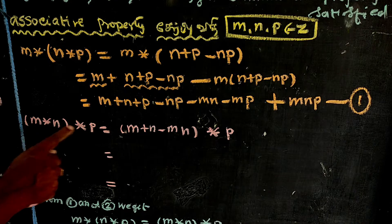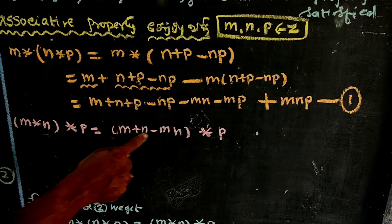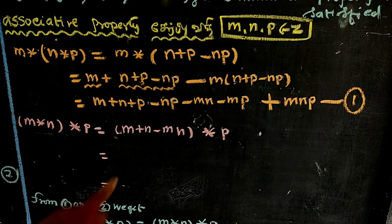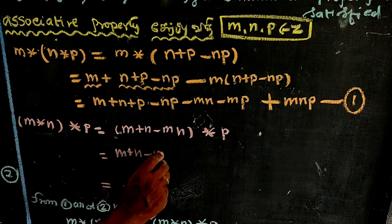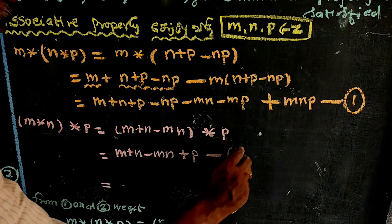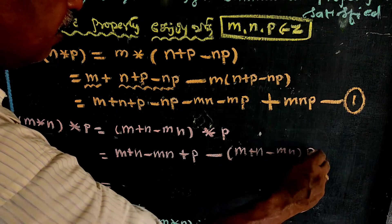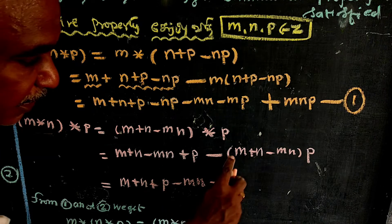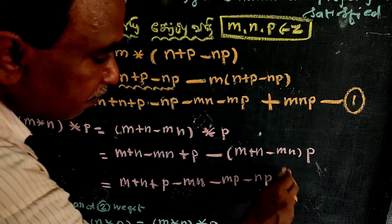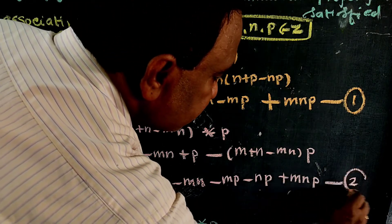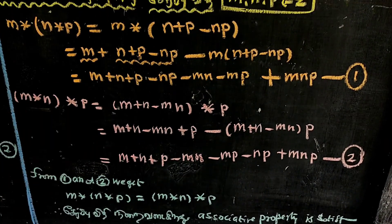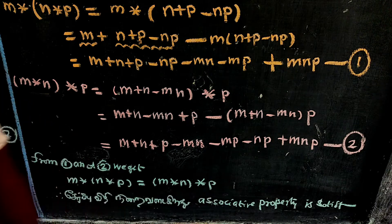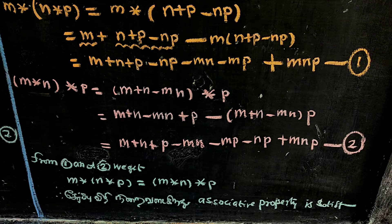Now computing M star N star P: first M star N equals M plus N minus MN. Then applying star with P: M plus N minus MN star P gives M plus N plus P minus MN minus MP minus NP plus MNP. Both sides are equal, so the associativity property is satisfied.